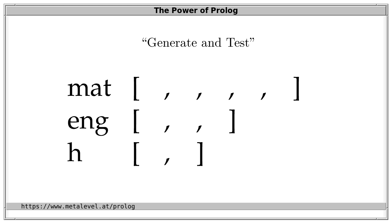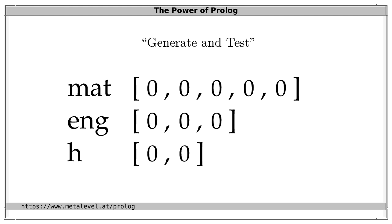After all variables are assigned a concrete integer, we test whether this is a solution. Assigning zero to everything is definitely not a solution — it means every lesson takes place at slot zero simultaneously. Imagine arriving at school Monday morning to five simultaneous lessons of mathematics plus English and history all at the same time. That's not what we expect from a school timetable.